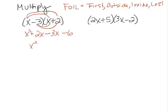So I get x squared minus 1x, or just x, minus 6. So that's one way of multiplying.